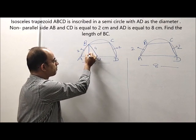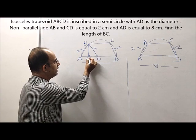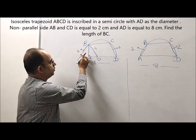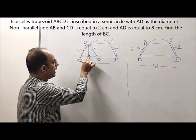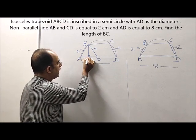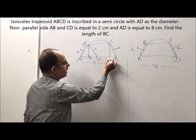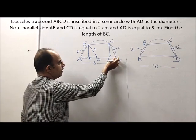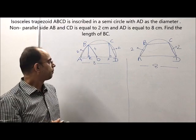Now if I drop a perpendicular from B on AO and let us name it E, then we can use Pythagoras theorem and get the value of AE. Similarly, we can drop a perpendicular from C and let us name it F.